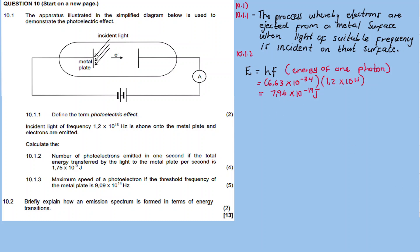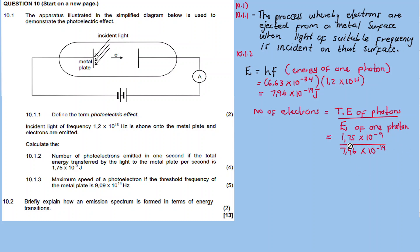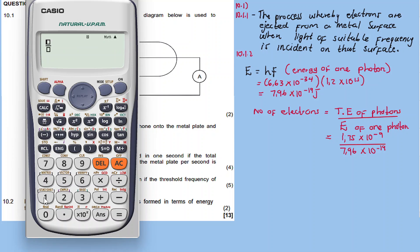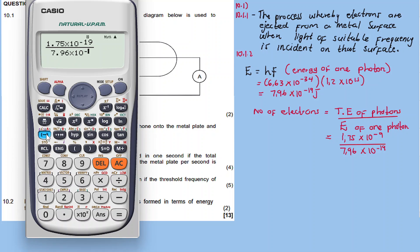So one photon carries that energy. Now the number of electrons can be calculated as the total energy of photons divided by the energy of one photon. So we take the total energy divided by 7.96 times 10 to exponent minus 19. This gives us the number of electrons, since each electron corresponds to one photon — it's 9, not 19 in the exponent.